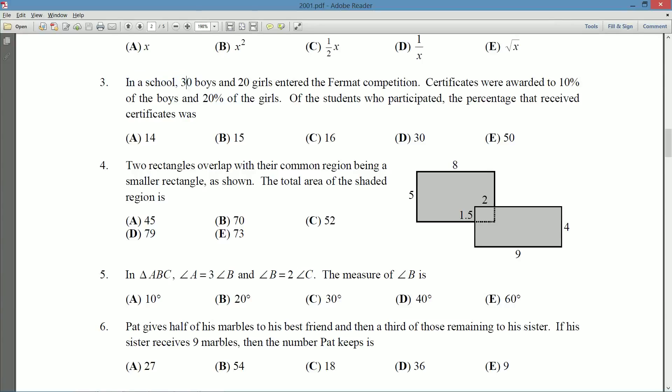So question three. In a school, 30 boys and 20 girls entered the Fermat competition. Hey, that's the competition that we're writing. That's a nice reference. Although I will say whenever I was doing these competitions there were never this many people. 30 boys and 20 girls. That's got to be a big or a very math inclined school. So we have 30 boys, 20 girls in the Fermat competition.